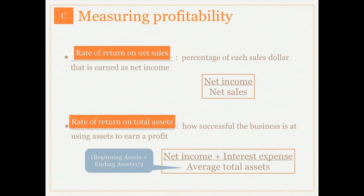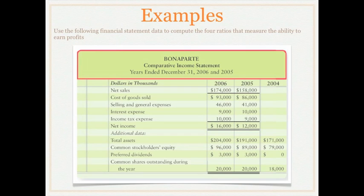Let's use an example to calculate and discuss these two ratios. Here I'm giving you some data on Bonaparte — a comparative income statement. Use this data to calculate the rate of return on net sales and the rate of return on total assets. Press pause on your player now, calculate those two ratios, and then we will discuss them.